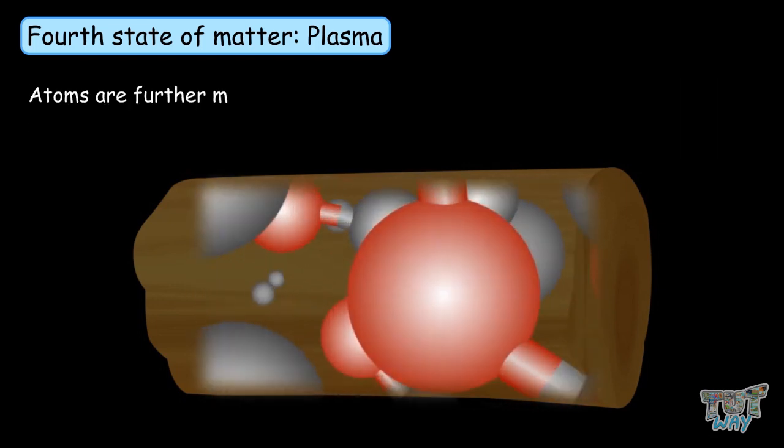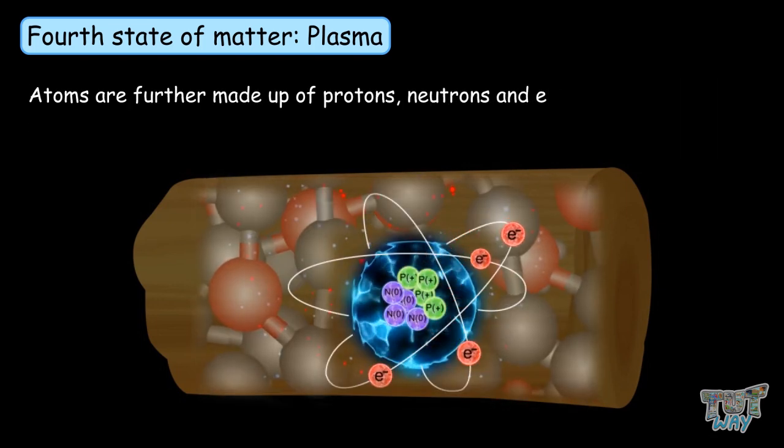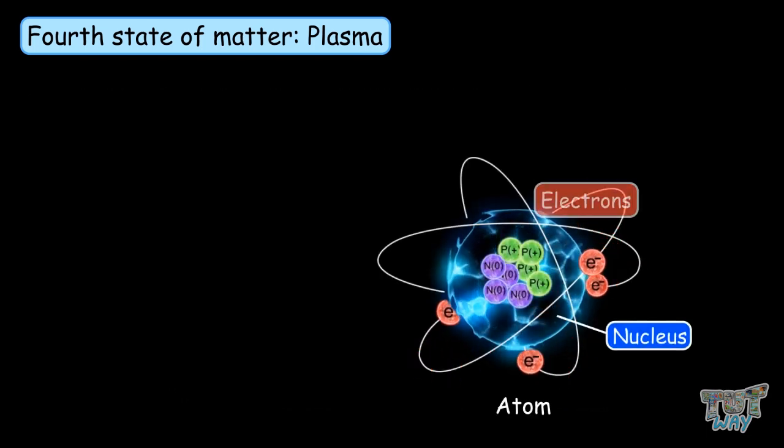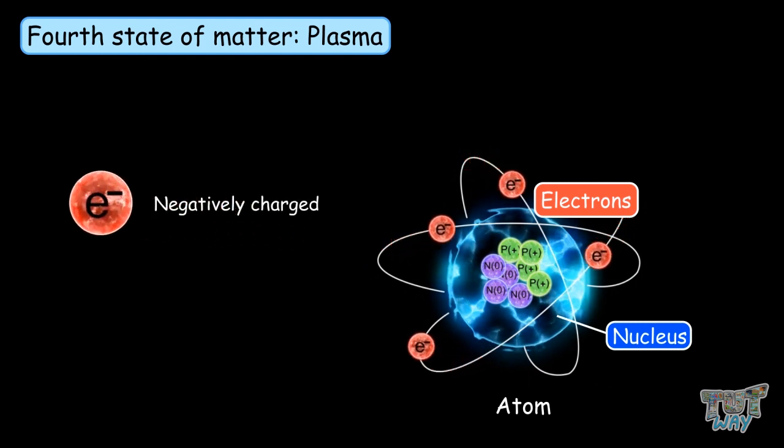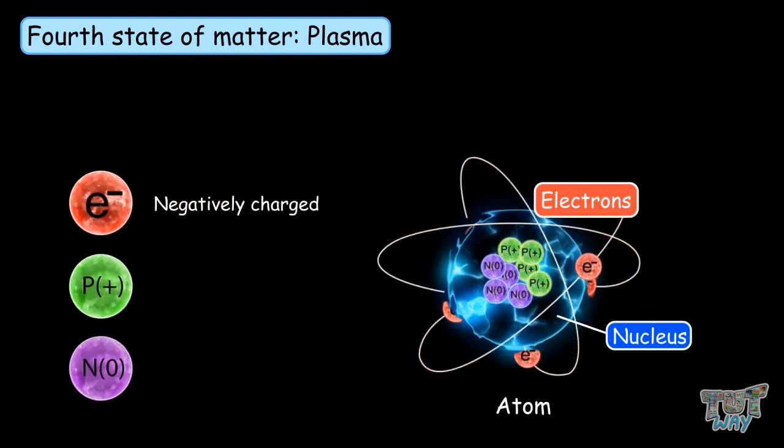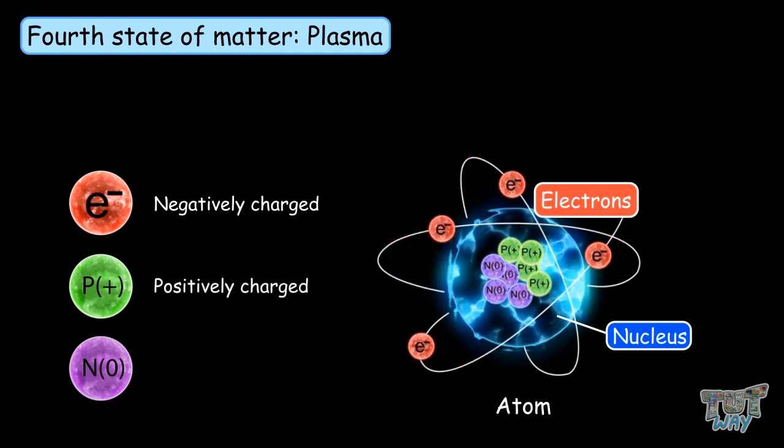Atoms are further made up of protons, neutrons, and electrons. An atom consists of a nucleus and electrons revolving around it. Electrons are negatively charged, and the nucleus consists of protons and neutrons, where protons are positively charged and neutrons are neutral.